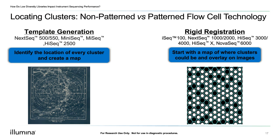For systems that use pattern flow cells, such as our HiSeq X, HiSeq 3000 and 4000, NovaSeq, iSeq, and the NextSeq 2000 systems, clusters will form in nano wells that are manufactured onto the flow cell. With a pattern flow cell, registration markers called ring fiducials are used to align a predetermined map of the ordered nano wells. On a pattern flow cell, template generation is therefore not needed. Instead, the instrument uses the first few cycles to identify wells that have clusters and which wells are empty.